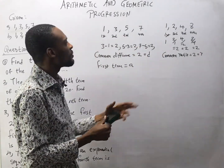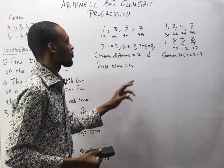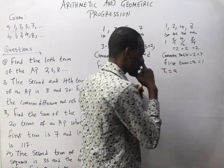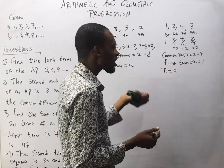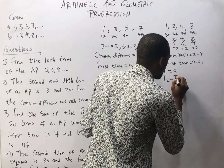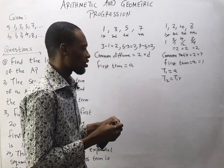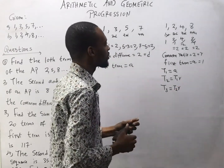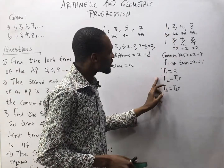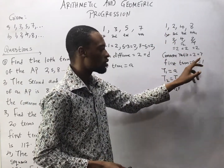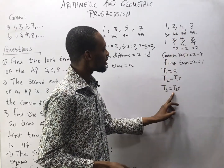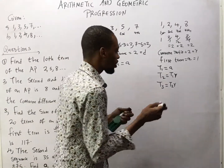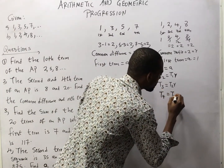Now let's predict the next term. The next term here for the AP will simply be adding 2 to 7, which will be 9 because the common difference is 2. For the GP, the second term T2 will simply be first term times R, and the third term will be second term times R. First term is A = 1. Second term is 1 × 2 = 2. Third term is 2 × 2 = 4. So the fourth term will simply be third term times R.